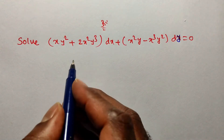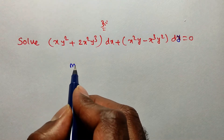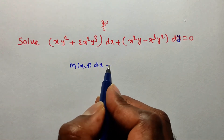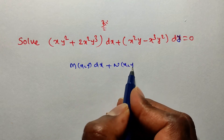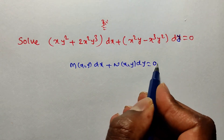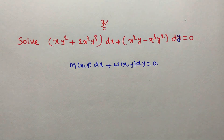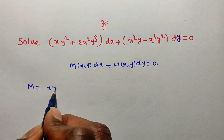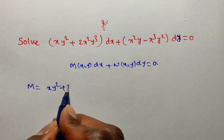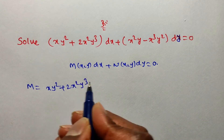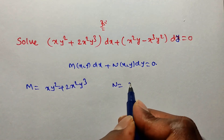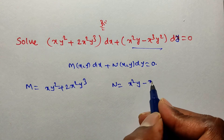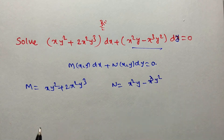The given problem is in the form M(x,y)dx + N(x,y)dy = 0. In this case M is the dx term: xy² + 2x²y³, and N is the dy term: x²y − x³y².